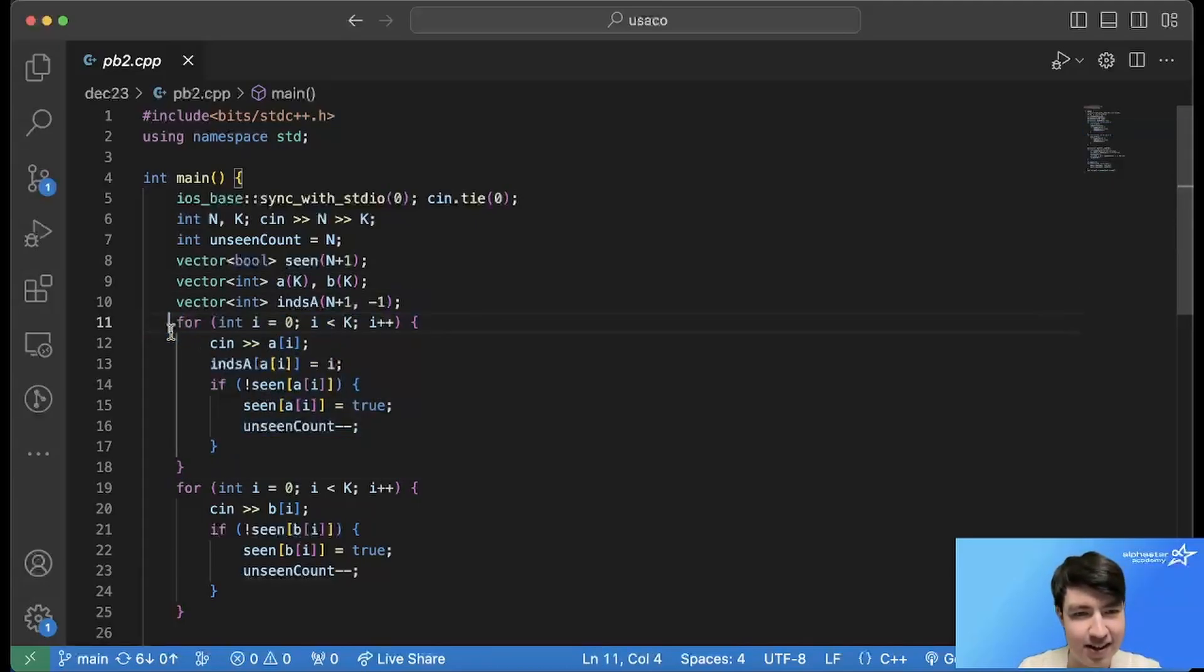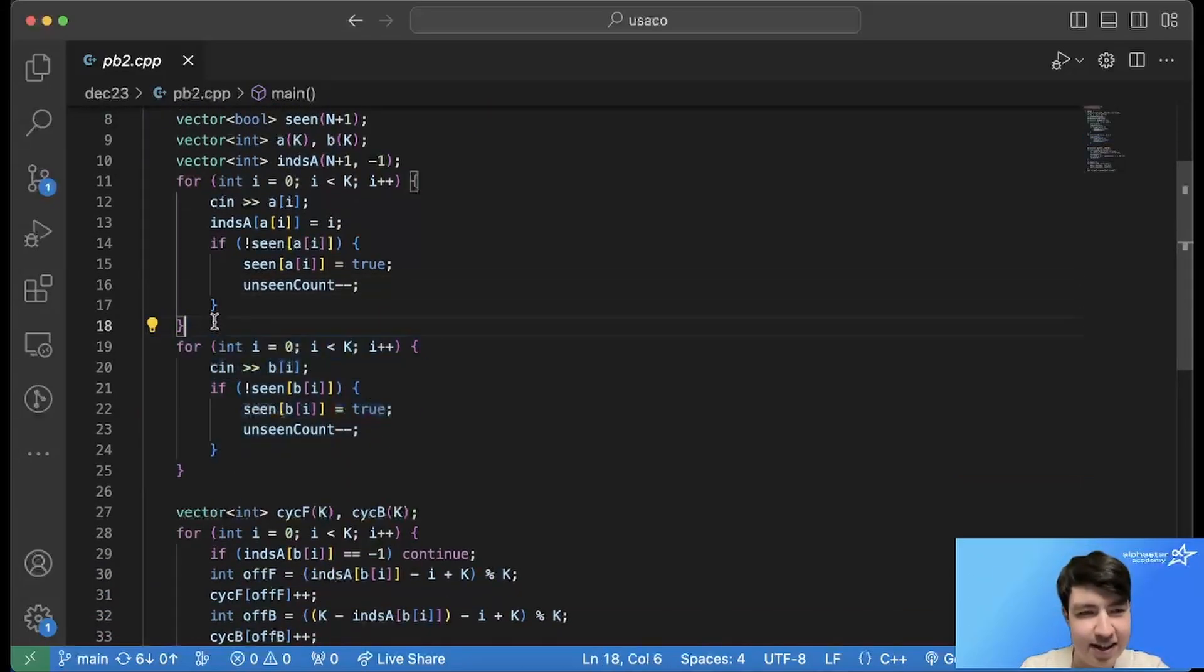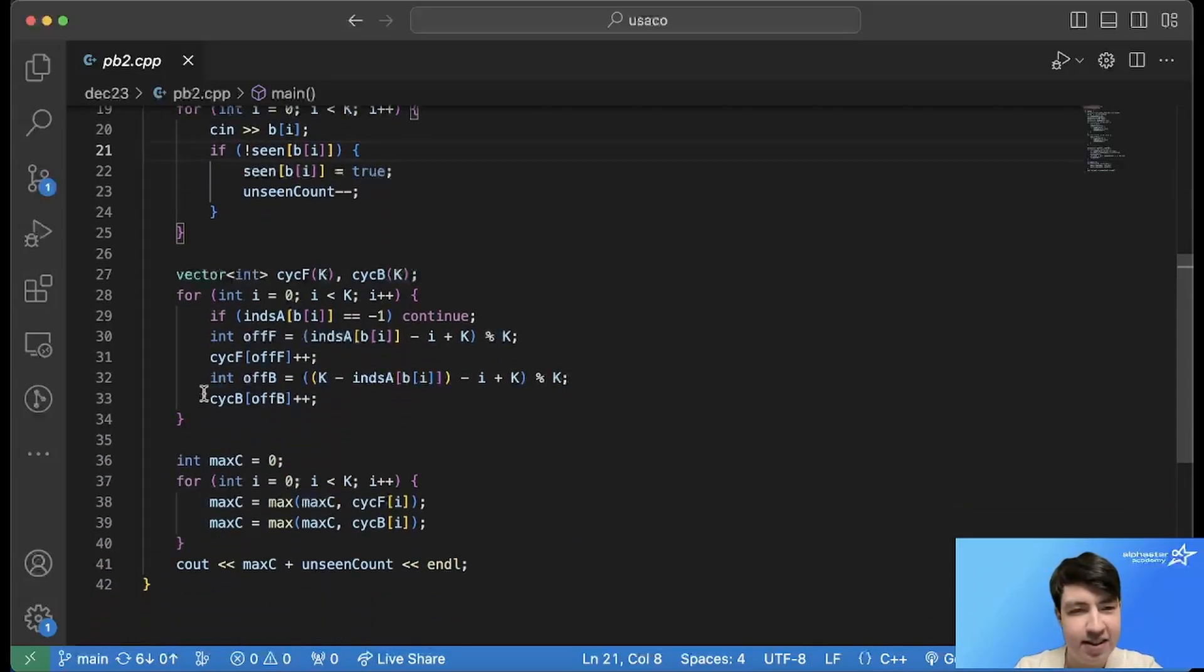So first of all, we read in all our A's. We read in A, and then we set our reverse index. So we're saying that the reverse index of the label is the position I. And if we haven't seen the label before, which should always be true for this cycle, but whatever, we set it to true, and then we decrease the number unseen. And then we do the very same thing for the B array, except we don't have to worry about reverse indexing, because we only have to worry about that for A. And then we do the same thing where if we see a new label, then we decrease the number unseen.